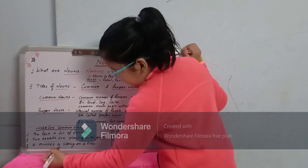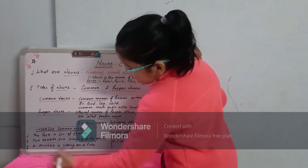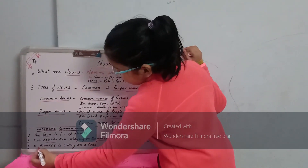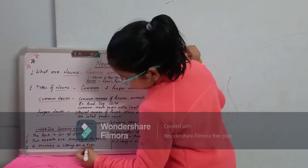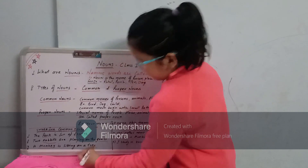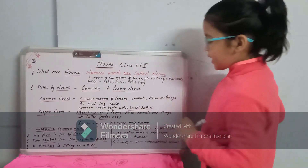My third example is: a monkey is sitting on a tree. Here, monkey and tree are the common nouns.